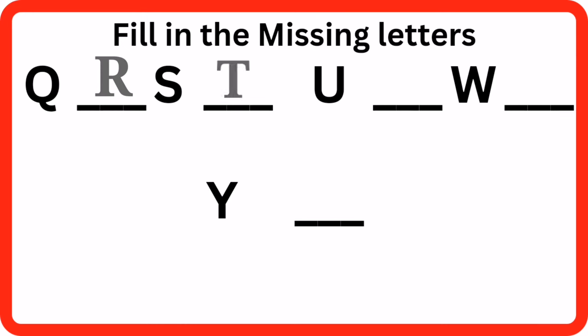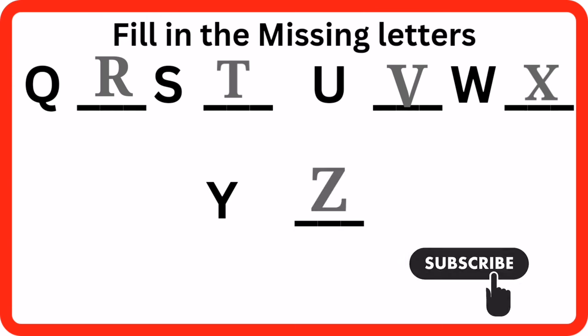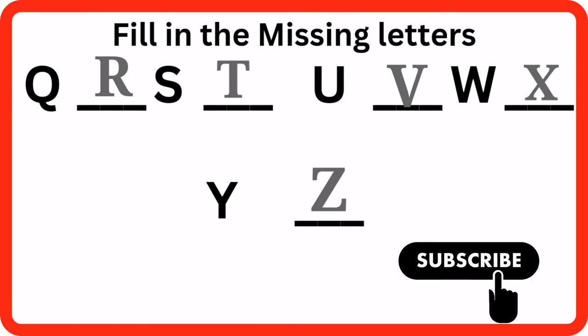Words come after letter U. V. Words come after letter W. X. Words come after letter Y. C.